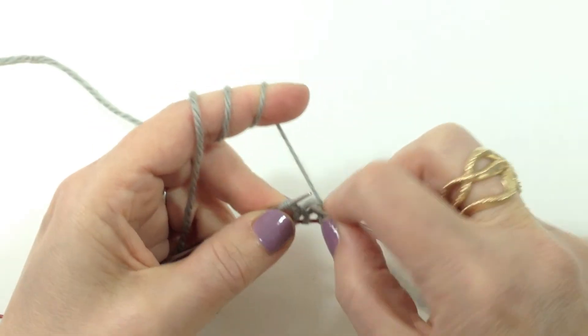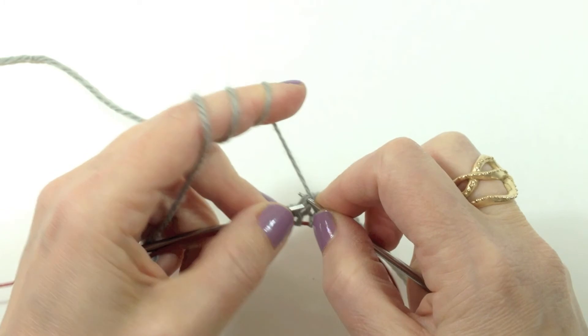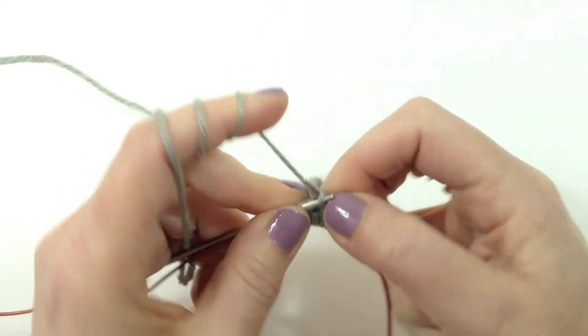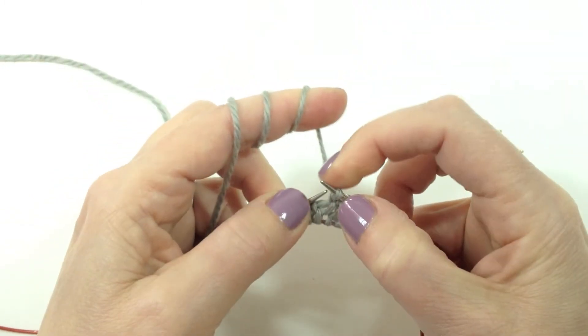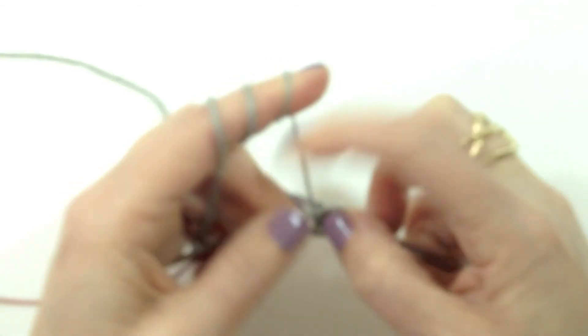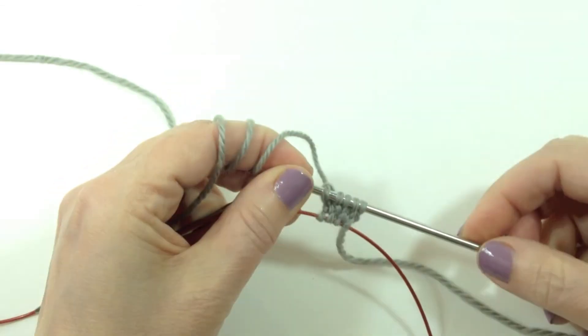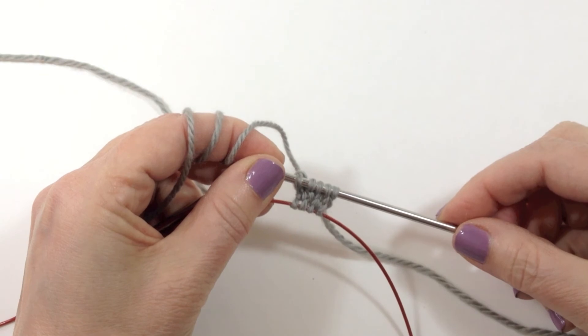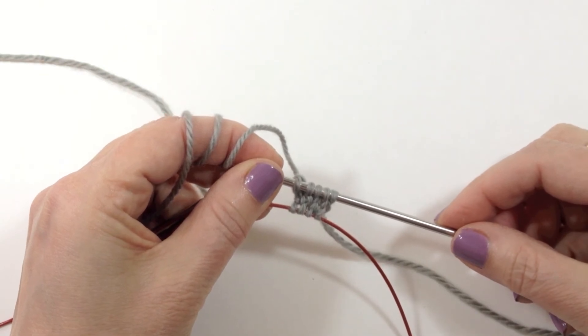And here's where you can do a make one if you want to add a ninth stitch. I'll go ahead and do that because on a basic pie shawl it starts with nine stitches. So now I've got my first round of knitting done and I've increased to nine stitches.